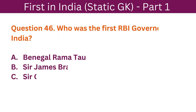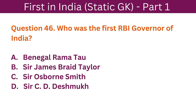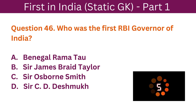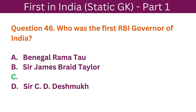Question 46: Who was the first RBI Governor of India? A. Benegal Rama Rao. B. Sir James Braid Taylor. C. Sir Osborne Smith. D. Sir C.D. Deshmukh. The correct answer is C. Sir Osborne Smith.